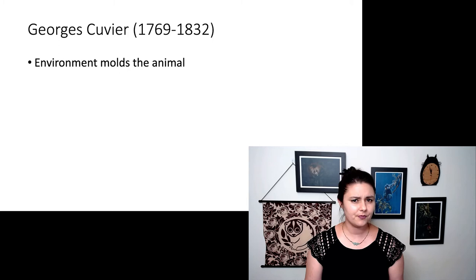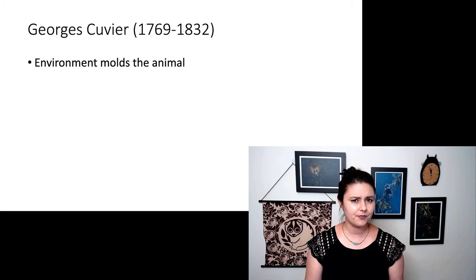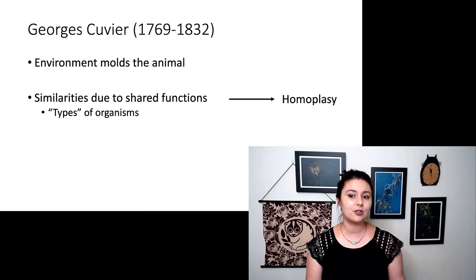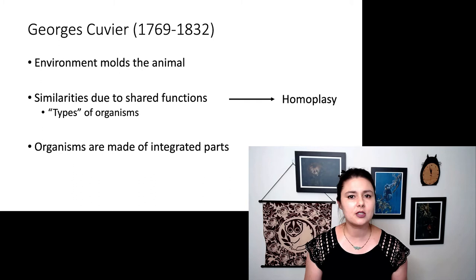He did think that the environment molds the animal. He had an inkling of an evolutionary way to think of things. But he thought these similarities were due to shared functions. This is similar to what we call homoplasy today. He also thought that organisms were made of integrated parts. So we have some ideas that match our understanding of biology today, but other ideas he held do not match how we view biology at the moment.